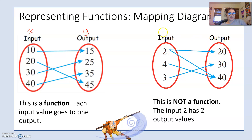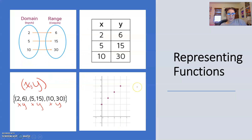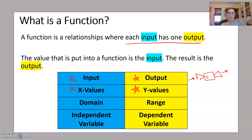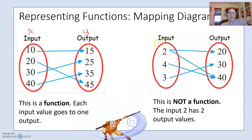Here's another mapping diagram where I have two, four, and three going to 20, 30, and 40. This is not a function, because the input value two has two output values. My definition of a function says we can only have one output for each input, and this input has two outputs — so that goes against the function rule.